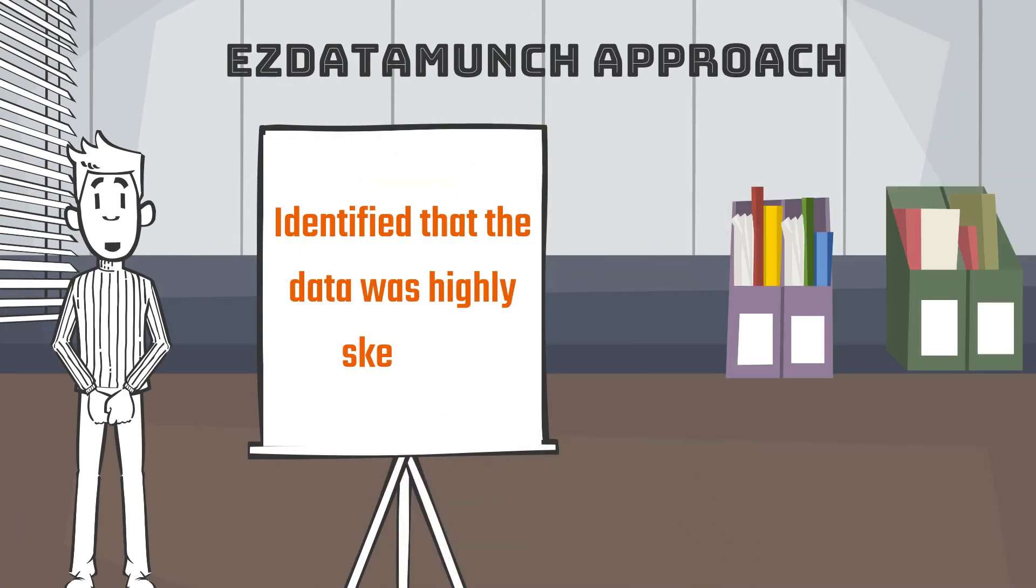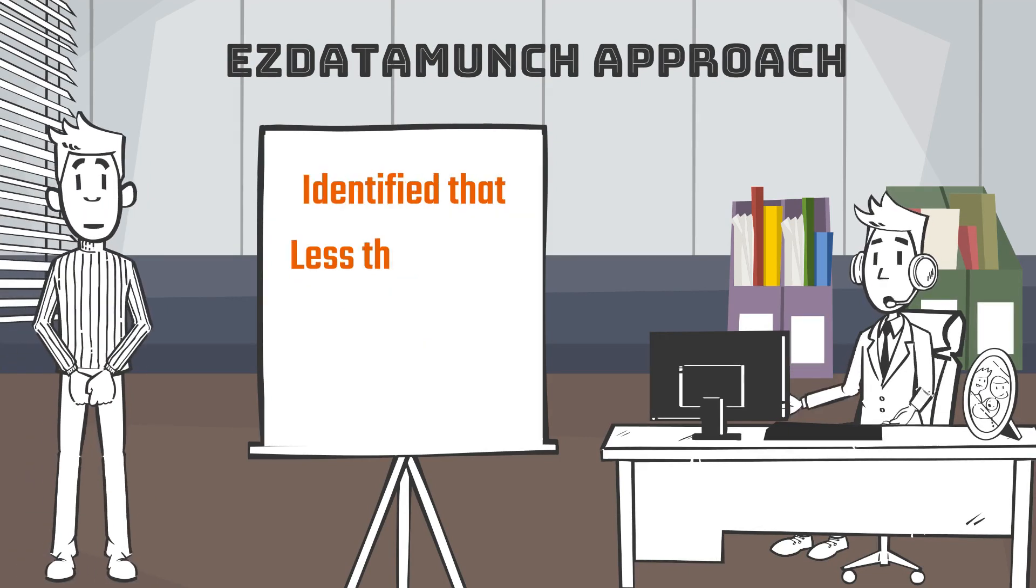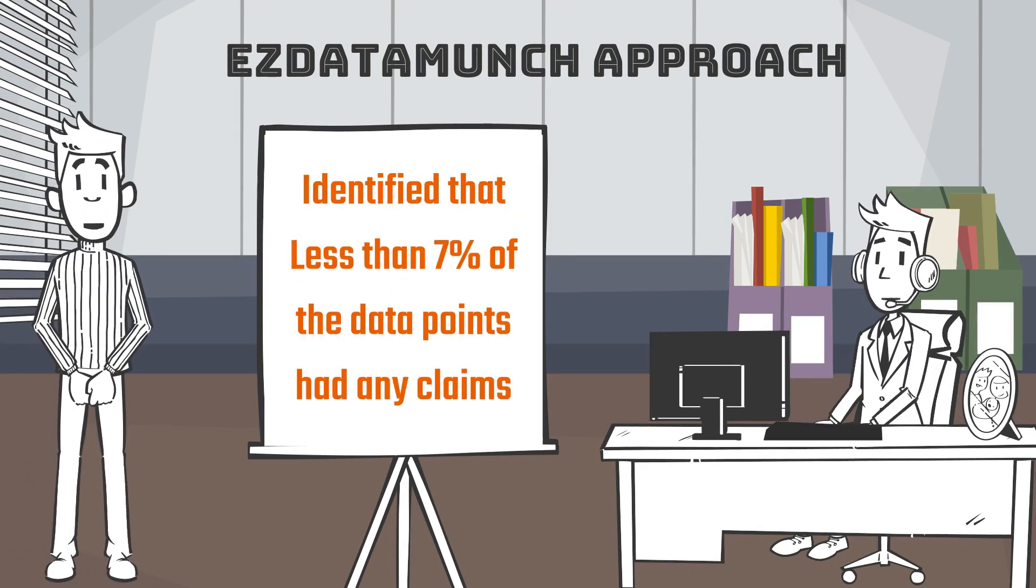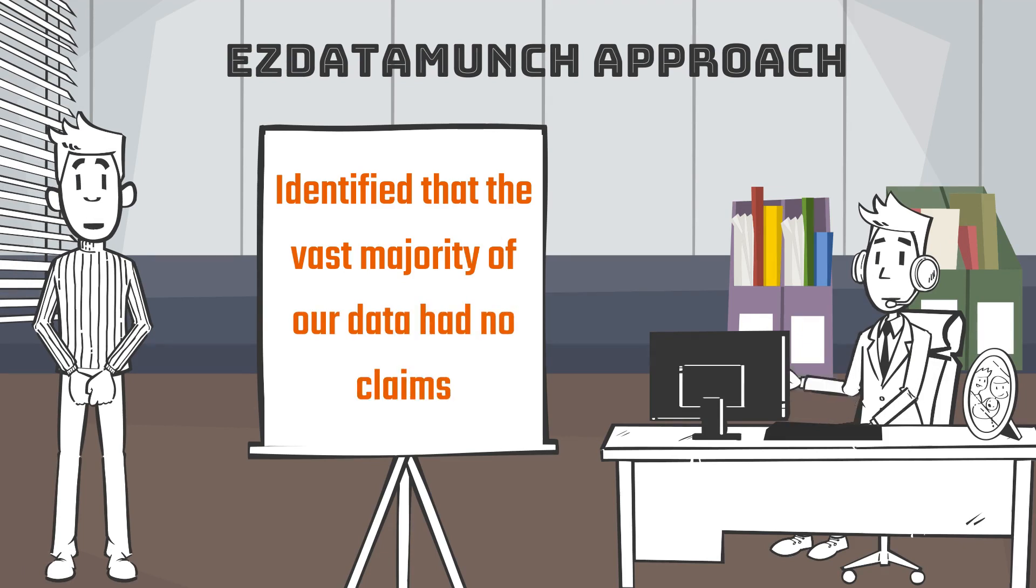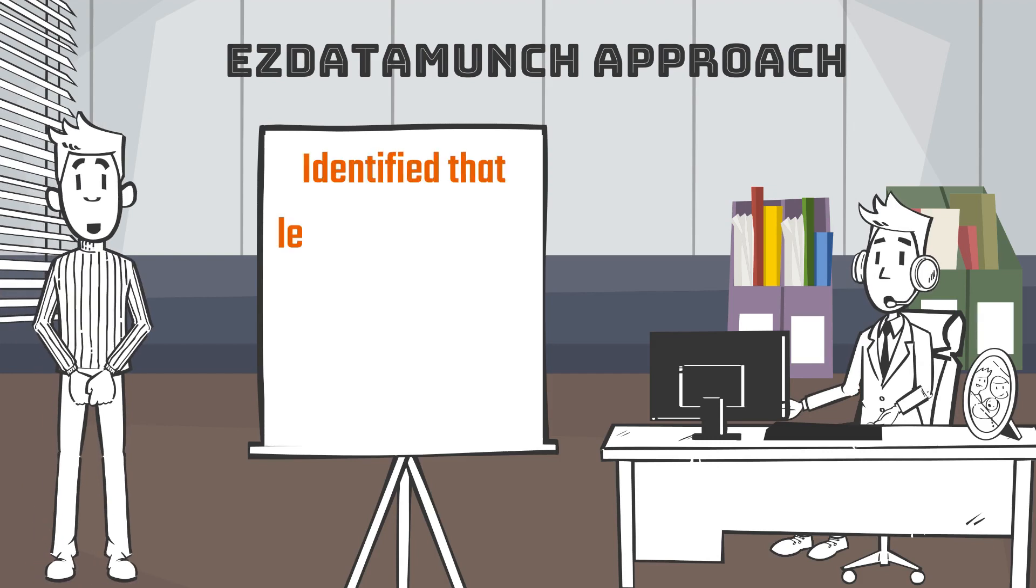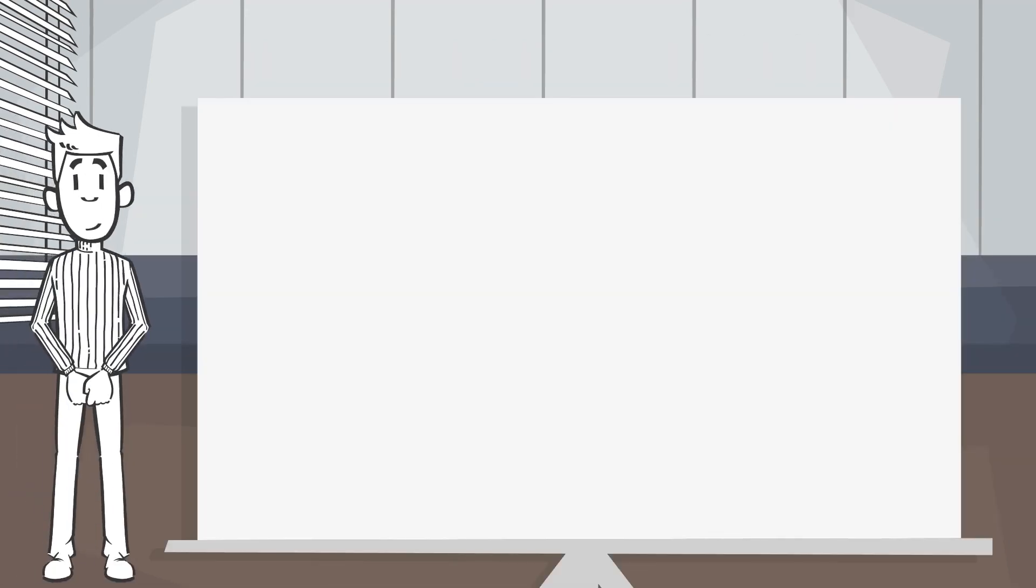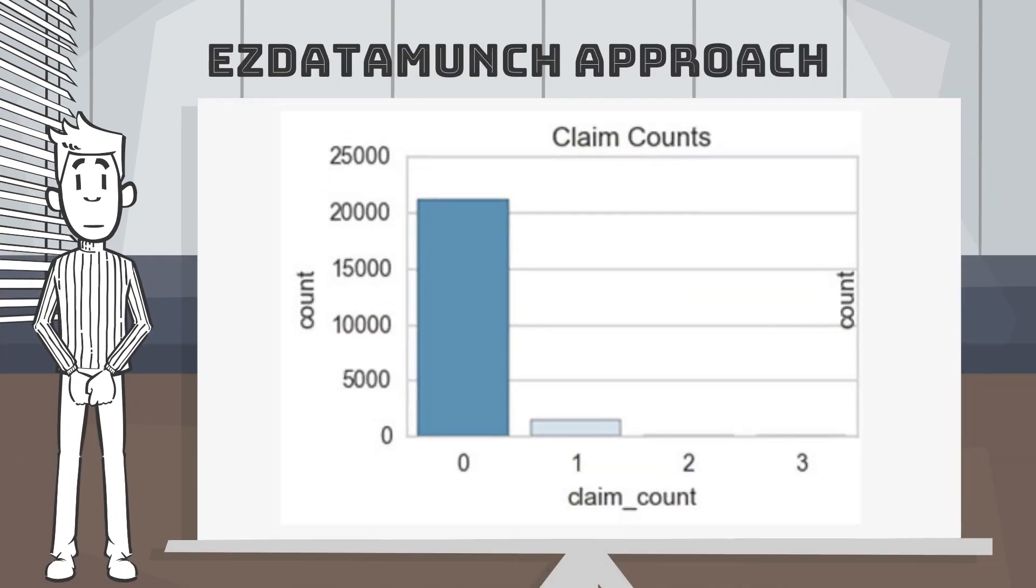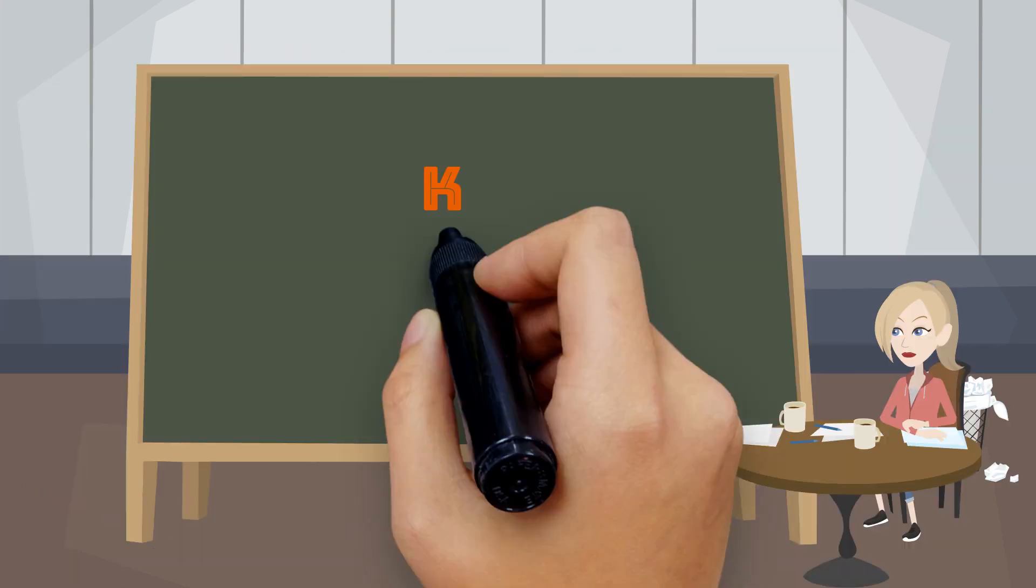Identified that the data was highly skewed. Identified that less than 7 percent of the data points had any claims. Identified that the vast majority of the data had no claims. Also identified that less than 0.4 percent of the data had greater than a single claim.